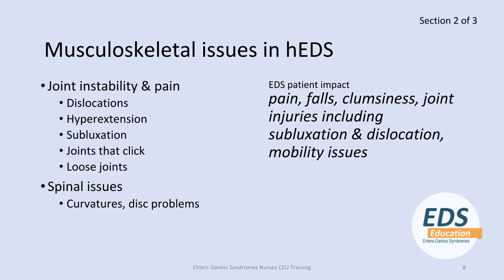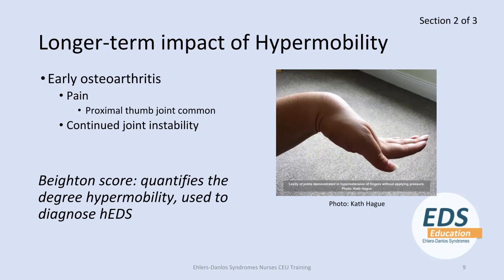Musculoskeletal issues in hypermobile EDS are a direct result of joint instability. The most common symptom you'll probably see is pain. You can also see a lot of fatigue from the pain, as well as falls, clumsiness, and joint injuries — all related to joint instability. You may also see patients with spinal curvatures and disc problems, the major symptom again being pain and its impact on the person's life. The long-term trajectory of hypermobility is that the joint actually becomes arthritic, whether slightly or extremely hypermobile, and can be quite painful, especially later in life.